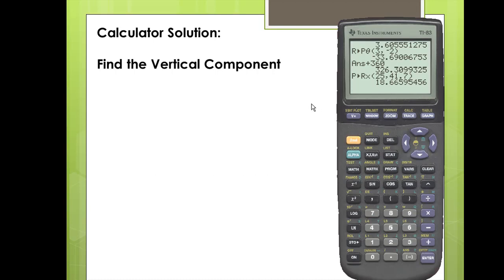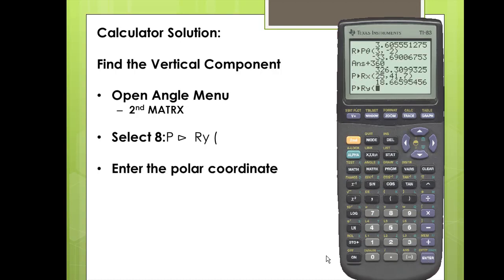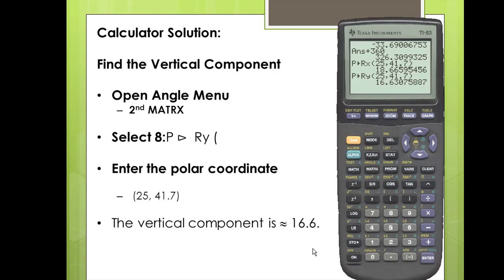Next let's find the vertical component. We open the angle menu with second and matrix, scroll down to the eighth function, and press enter. We enter the polar coordinates: magnitude 25 and direction angle 41.7, then close off the function. We have a vertical component of 16.6. Thanks for watching.